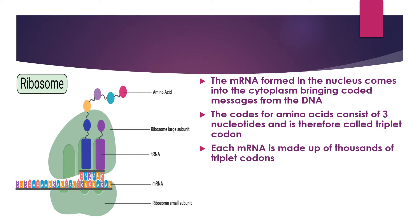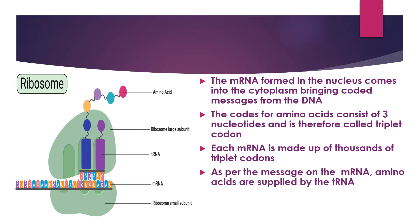Each mRNA strand is made up of thousands of triplet codons, and each triplet codon is made up of three nucleotides. As per the message in the mRNA, amino acids are supplied by the tRNA. The tRNA brings in guanine, cytosine, uracil, adenine, and complements the triplet codons.